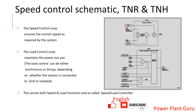Let us first understand what is TNR and what is TNH. TNR is Turbine Speed Reference and TNH is actual speed. These are the literal meanings, but I will describe them in very simple words to make it easy to understand.